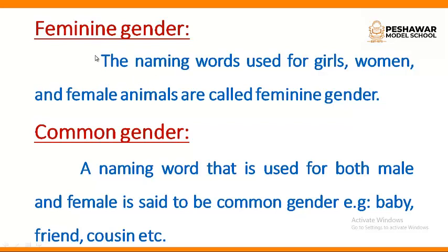Now there is a third gender, that is common gender. A naming word that is used for both male and female is said to be common gender. Examples are baby, friend, cousin — these are the common genders which can be used for both masculine and feminine.